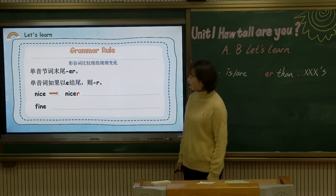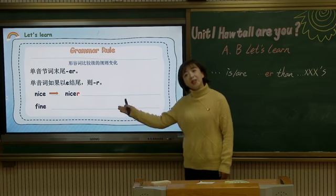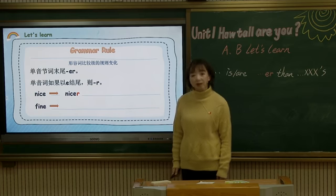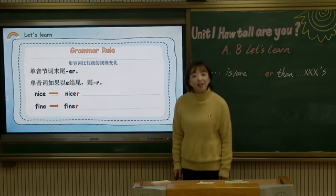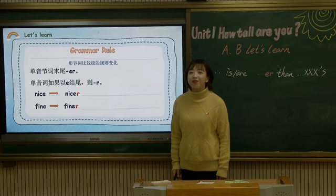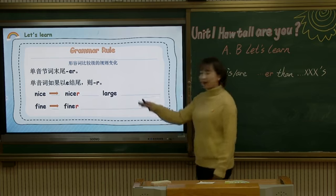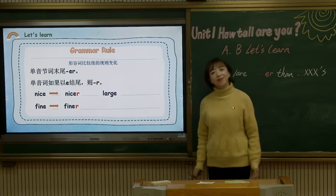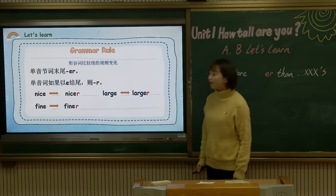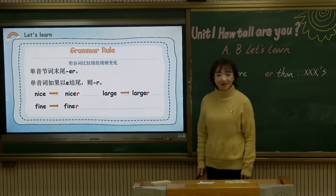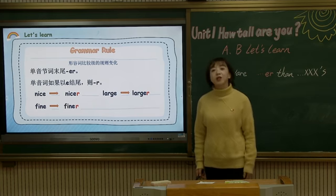Let's see another word: Fine. Fine 也是以-e结尾，我们要怎么变比较级呢？直接加-r. Follow me: finer. Finer. Let's see 'large' — 巨大的。Large 这个词应该怎么变比较级呢？Larger. Larger. Excellent! 这是第二种变化。同学们，你们记好了吗？